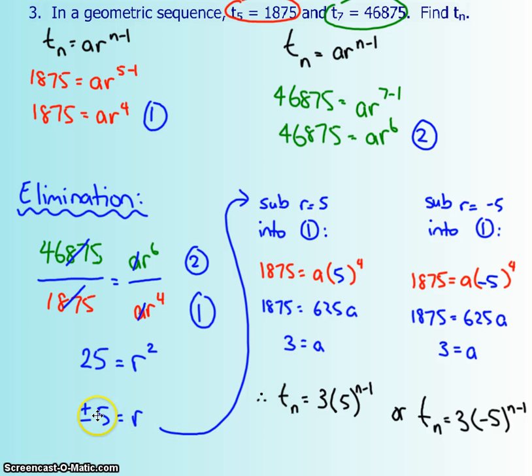But what if R was negative 5? Well, we're going to do that over here now. If R was negative 5, we're going to do the exact same thing and sub it into the first equation because it looks easier. We're going to sub that negative 5 in and, lo and behold, we still get a positive 625 because remember that negative is also to the power of 4. That means that A is 3, but we do get a different formula because our ratio is negative 5. You could always check with your calculator, start with 3, start multiplying by 5 and see if your fifth term is this and your seventh term is this. Then try it again. Start with 3 on your calculator, multiply negative 5 a whole bunch of times and see if your fifth term is this and your seventh term is this. It should be correct.